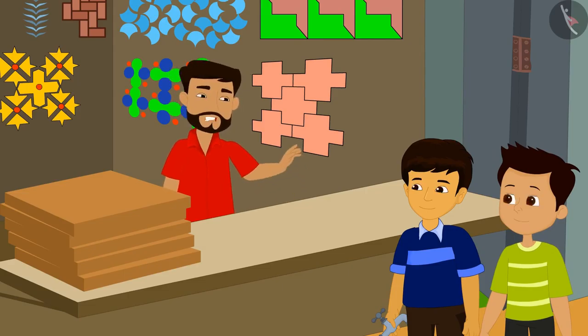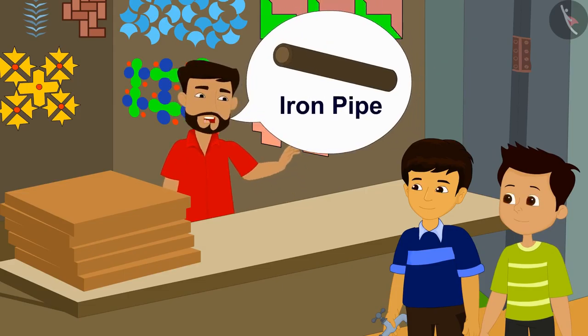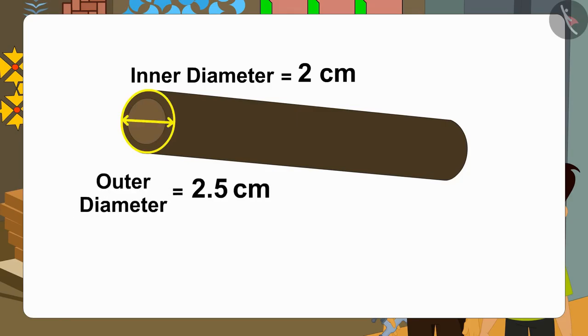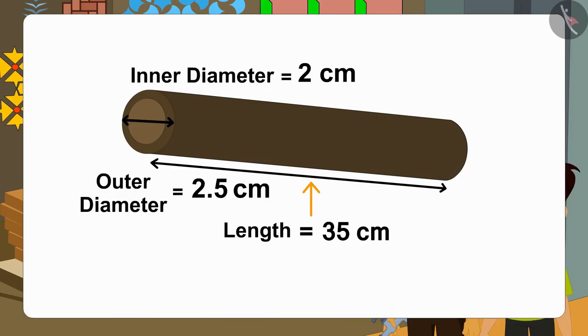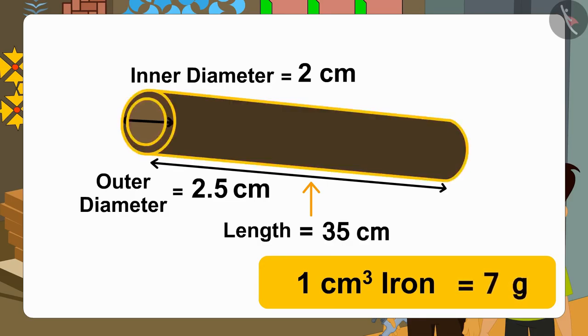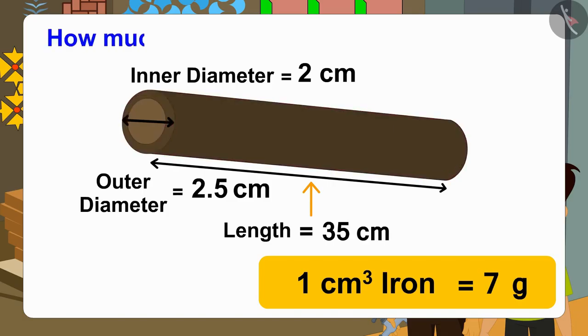Actually, I want to make an iron pipe. I know its inner diameter is 2 cm, outer diameter 2.5 cm, and length 35 cm. And I also know that the mass of 1 cubic centimeter of iron is equal to 7 grams. But I can't find out how much iron will I need to make the pipe.